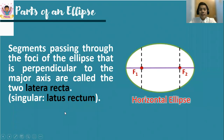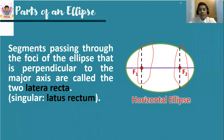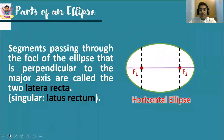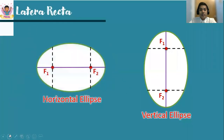We also have what we call the latus rectum. In a parabola we only have one latus rectum, but since the ellipse has two foci, we also form two latus recta. In plural form, we refer to them as the lateral recta. These are line segments passing through the foci that are perpendicular to the major axis, and they appear in both horizontal and vertical ellipses.